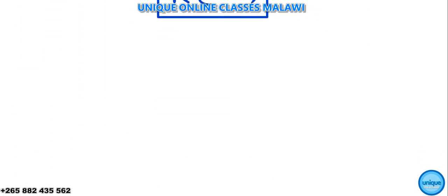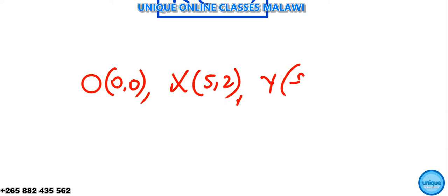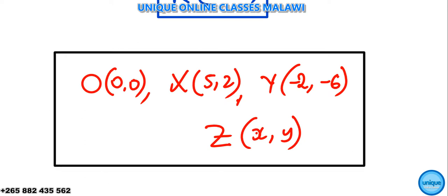You should find the coordinates of point Z where O is probably zero comma zero, X is 5 comma 2, and Y is negative 2, negative 6. And Z is X comma Y. Find the coordinates of point Z. The question says given that OXYZ is a parallelogram, find the coordinates of point Z. So that's the thing I'm asking. What would be your answers? So after solving it you're going to send your answers.